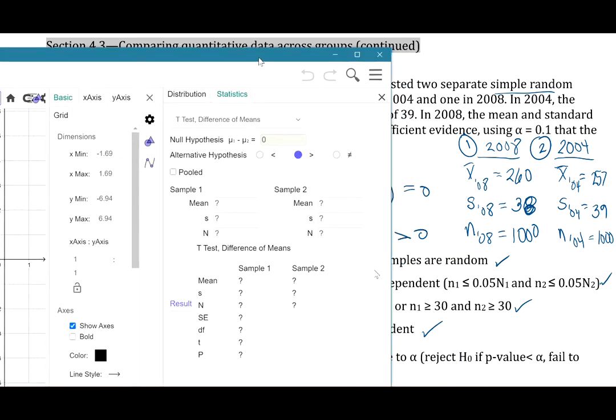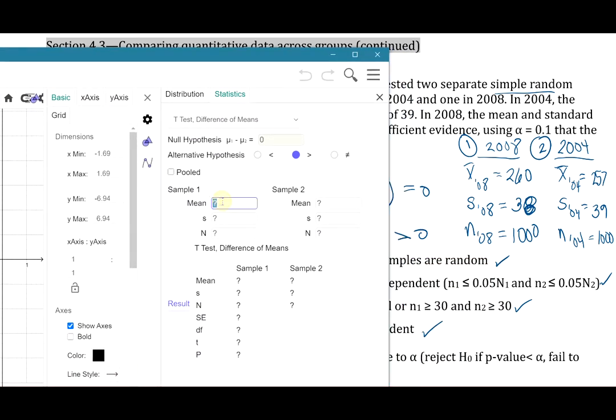So we need to put in our sample data. Sample one is going to be our 2008 data. So 260 for the mean, 38 for the standard deviation, and a sample size of 1,000.